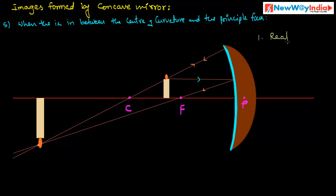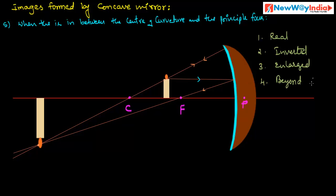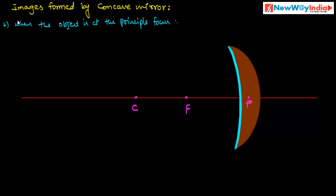The characteristics of this image are: it is a real image, it is inverted, and it is enlarged. It is formed beyond C, beyond the center of curvature. When the object is placed between the center of curvature and the principal focus, the image is formed beyond the center of curvature and it is enlarged.